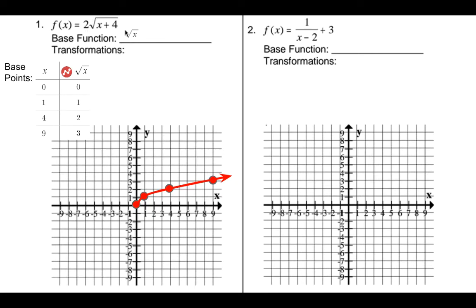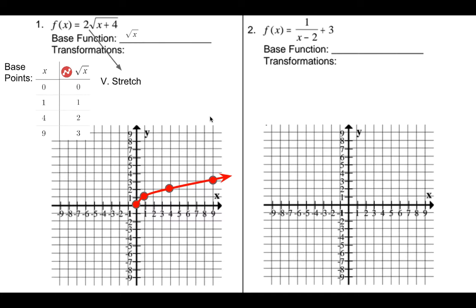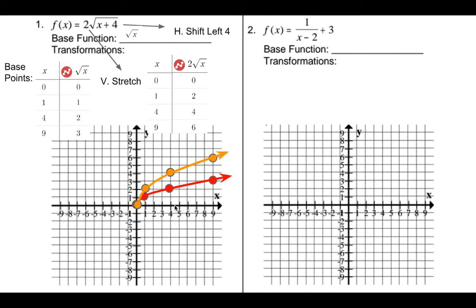The two is a vertical stretch and the four is a vertical shift. Doing the vertical stretch first, we multiply all the y values by two, so they get doubled: 0, 2, 4, 6 are the new y values. We plot those new points — (0,0), (1,2), (4,4), (9,6) — and you can see that vertical stretch pulling away from the x-axis. Then the plus four means shift left four, so we take those orange points and move them all left four to get the new graph.